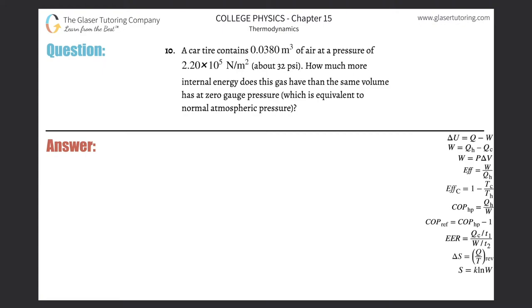Number 10, a car tire contains 0.038 cubic meters of air at a pressure of 2.2 times 10 to the 5 newtons per meter square. How much more internal energy does this gas have than the same volume has at zero gauge pressure, which is equivalent to normal atmospheric pressure?